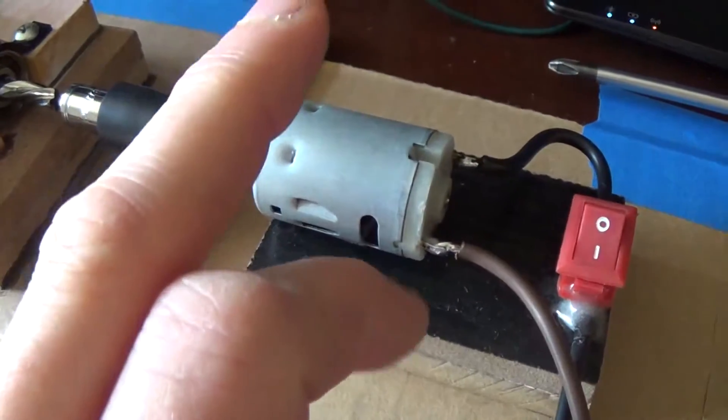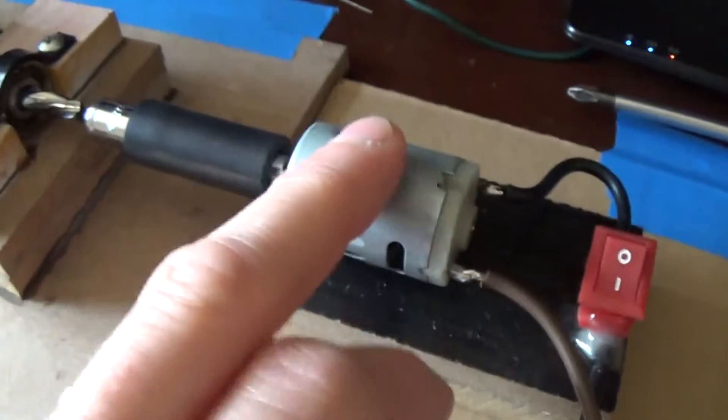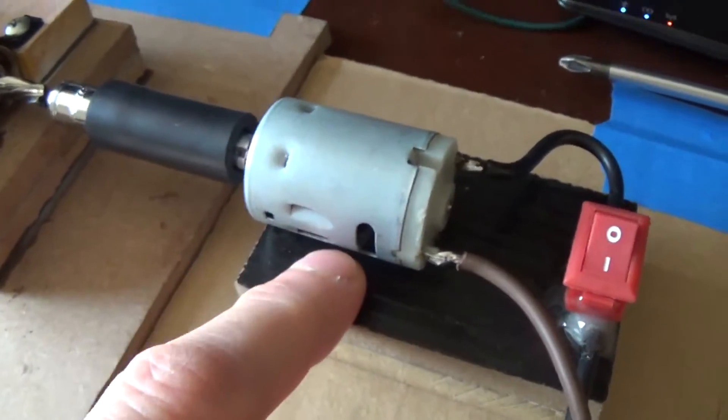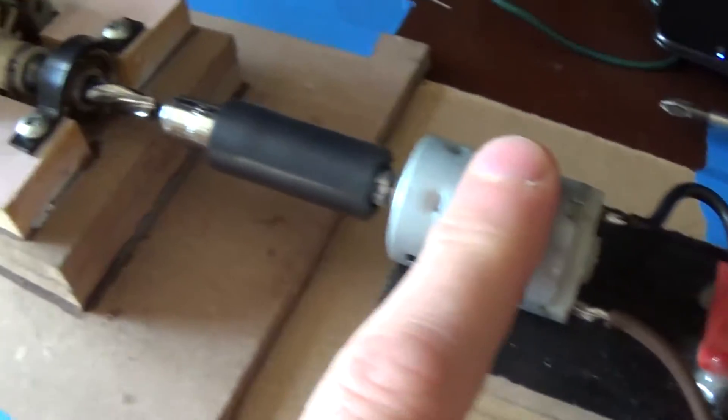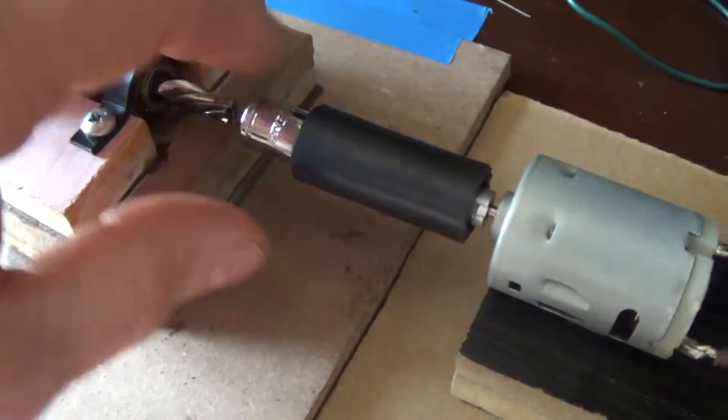And this little DC motor is out of a DC Dremel tool, a bit of a toy that you can pick up at Harbour Freight for probably like $10 or something like that. But I made this rubber coupler here and then I can push this right over the shaft and get a coupling.